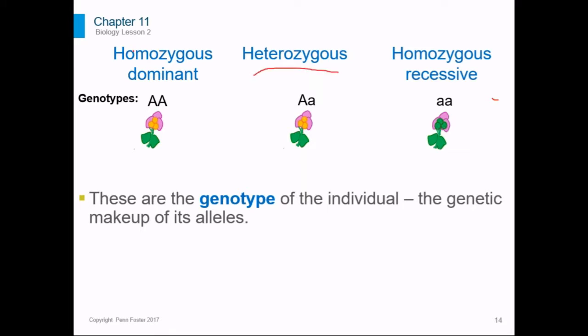Remember, the prefixes: homo means the same and hetero means different. These terms describe the genotype of the individual. A genotype is the genetic makeup of the alleles. It doesn't describe what the individual looks like; it describes the alleles that it has.